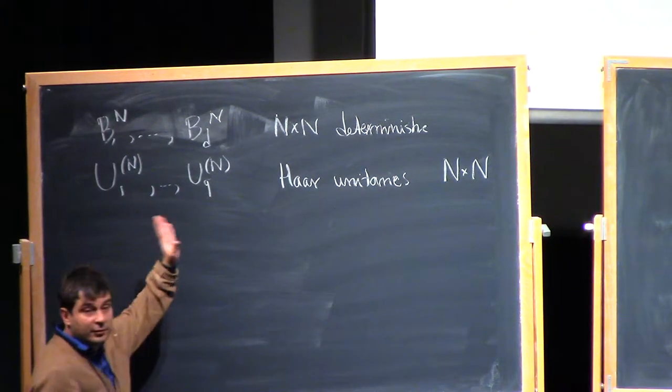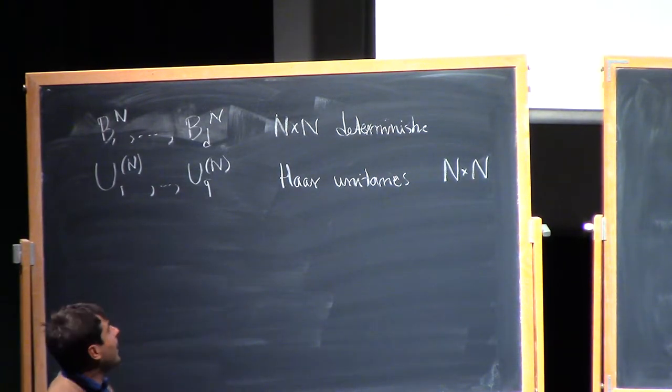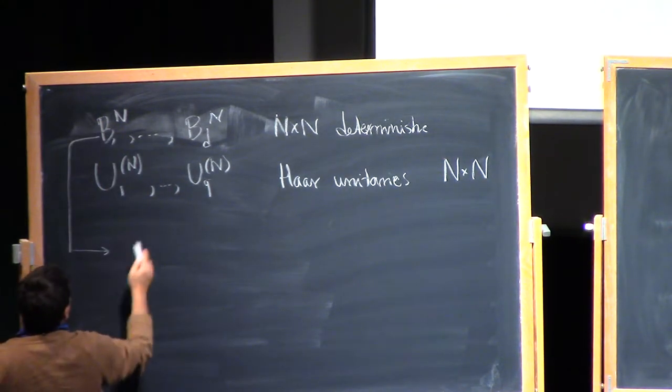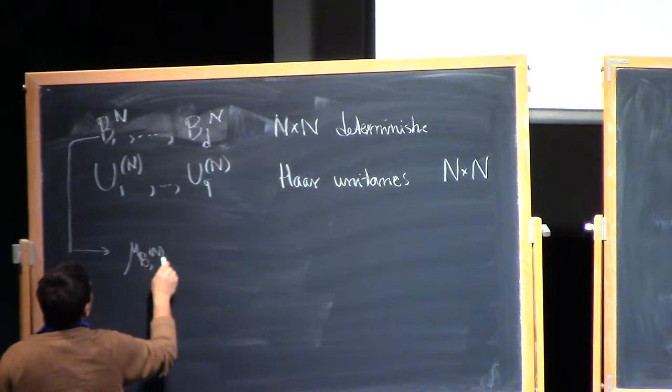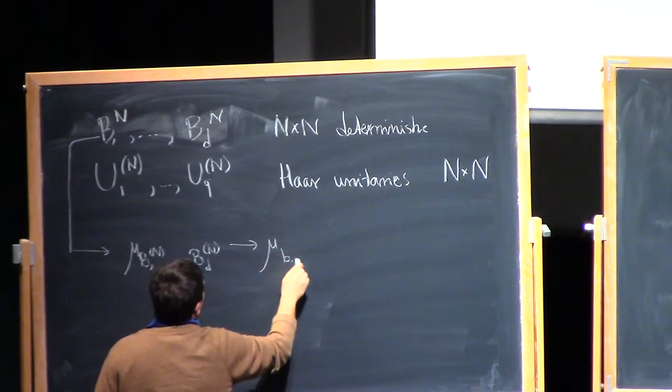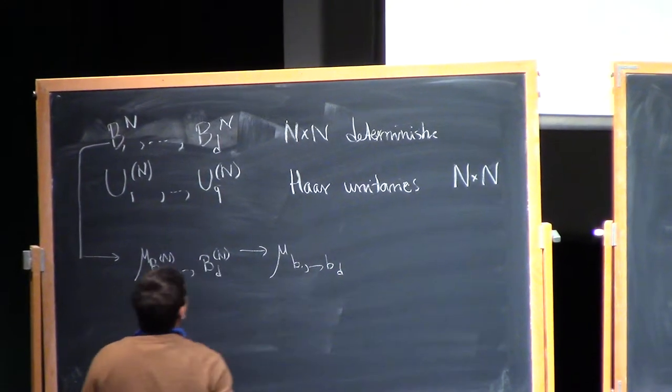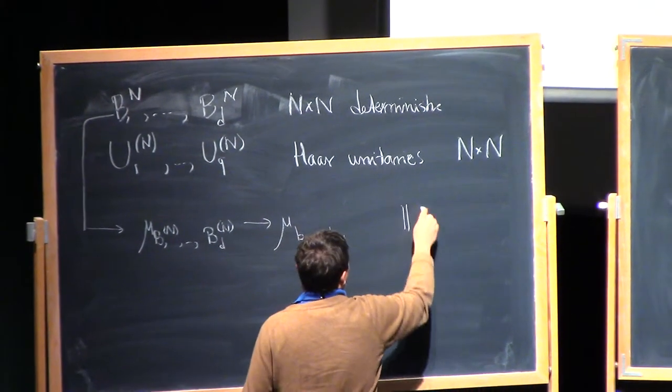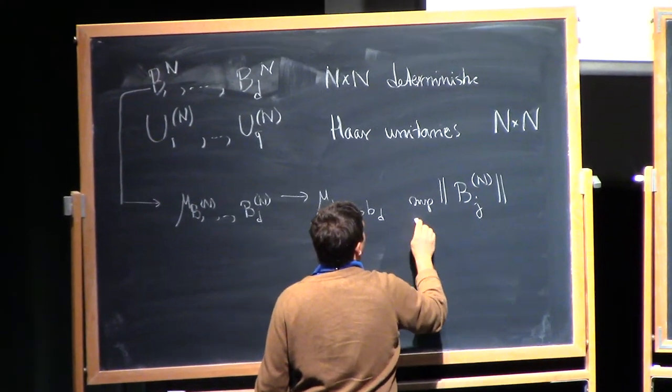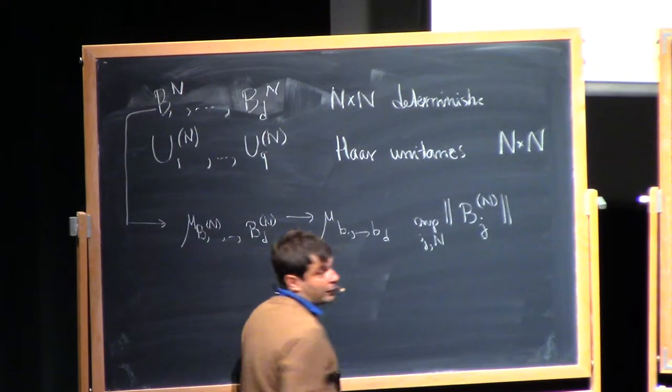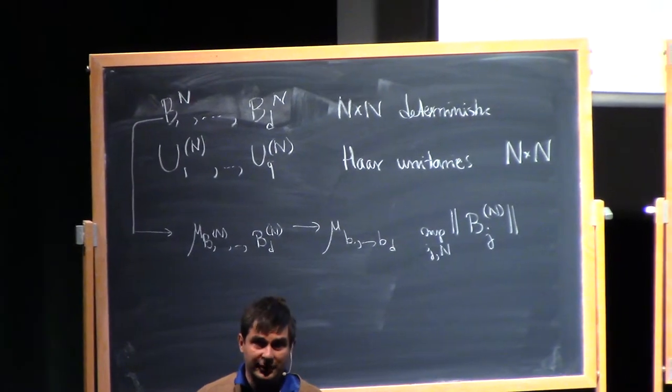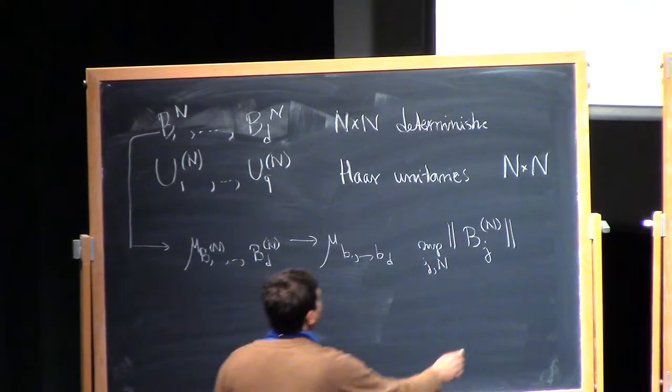And these you can take to be random, but you can even take them to be non-random. These are some deterministic n by n matrices. They're varying with N. And about these you make one assumption, namely that their law converges to some mu of some variables b_1 to b_d. And also their norms do not get too large, so their operator norms. We're assuming that this is finite.